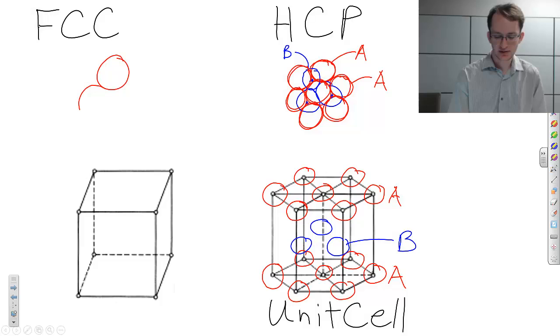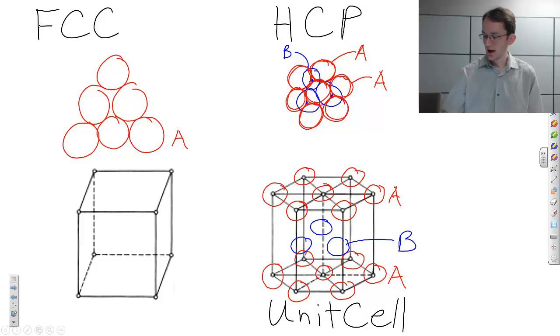So in this case, if we have a plane of atoms, an A plane, and then we put a B plane of atoms on top, they still want to sit again in these little holes between the A atoms. So they'll sit here, here, and here.